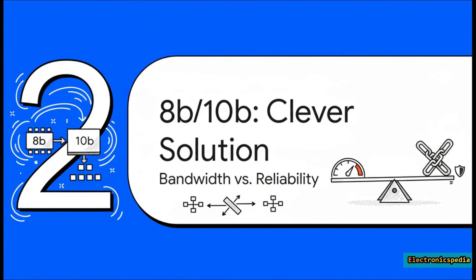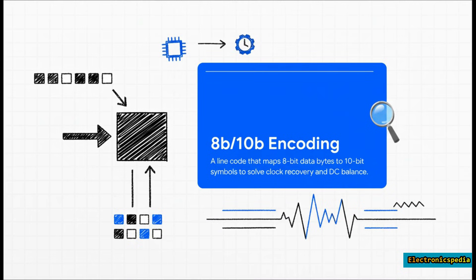So you've got two huge problems — how do you fix them both at the same time? Some very clever engineers came up with an elegant solution: 8B/10B encoding. The core idea is brilliant. You trade just a little bit of your bandwidth for a ton of reliability — a rock solid connection. For every 8-bit chunk of data, a standard byte, we translate it into a special 10-bit symbol before we send it out. These aren't just two random bits we're tacking on — it's an intelligent translation that creates a code that's way more durable for high-speed travel.